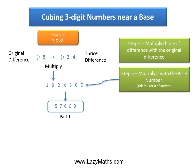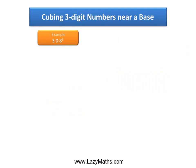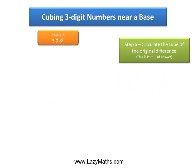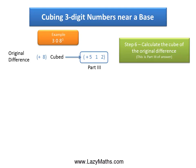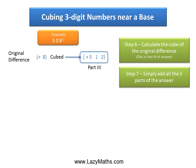To get part three of the answer, we simply cube the original difference: 8 cubed gives us 512. So 8 times 8 times 8 is 512, and part three of the answer is 512.